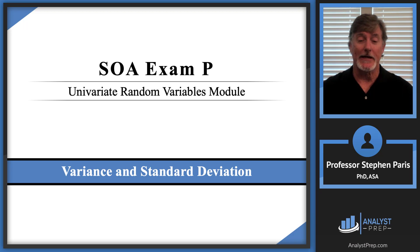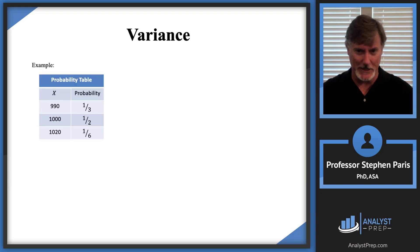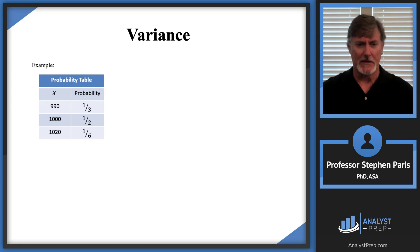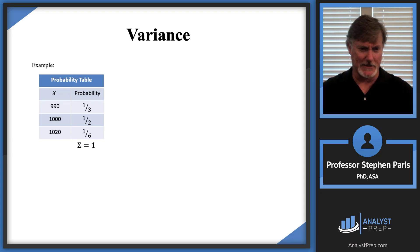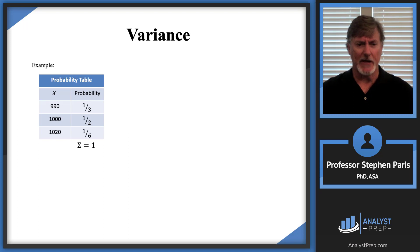In this video we're going to look at variance and standard deviation. Let me get into it with an example. I've got this probability distribution table, and I recognize that the sum of those probabilities is one — it is a valid probability distribution. I'm going to change those fractions to decimal values.